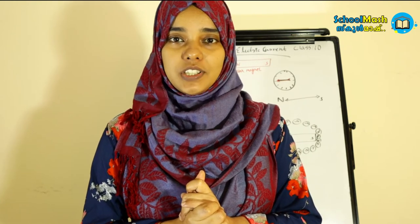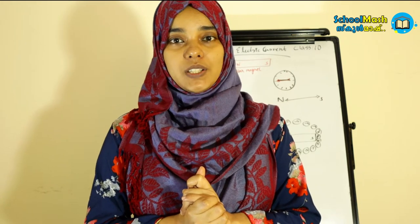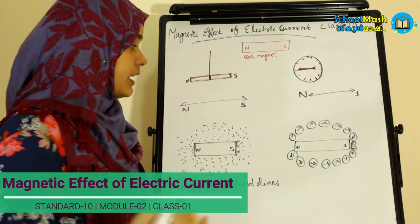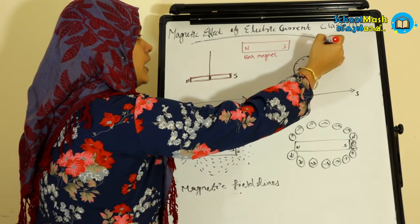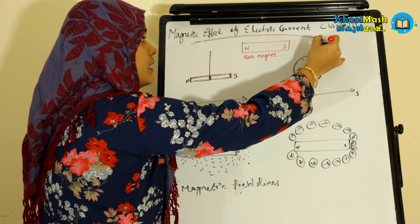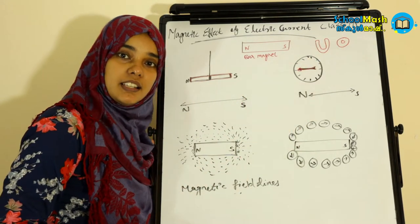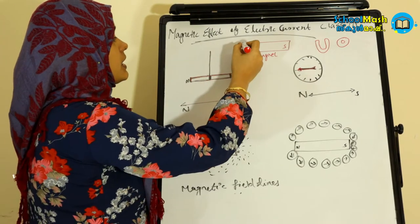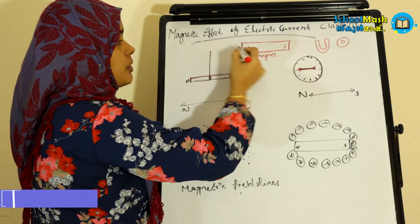We will discuss about magnets. All of you are very familiar with magnets. There are many shapes of magnets — there are many bar magnets, there are U-shapes, and there are many ring shapes. Now I am going to use a bar magnet. This is a bar magnet. It is a rectangle-shaped magnet.